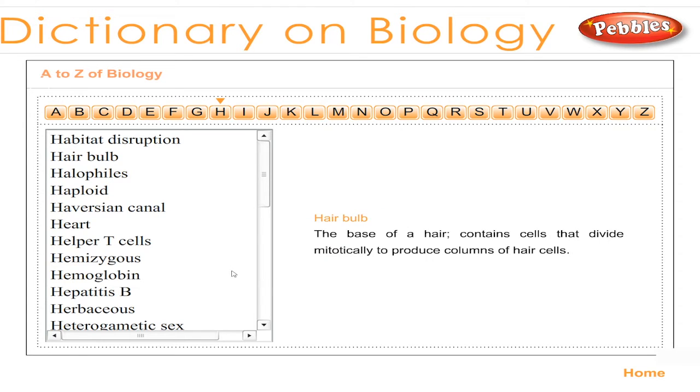Hair bulb: the base of a hair; contains cells that divide meiotically to produce columns of hair cells.